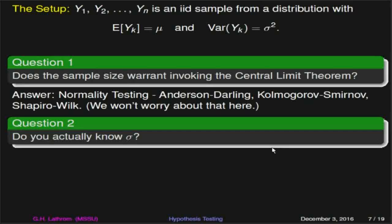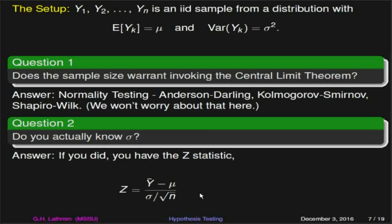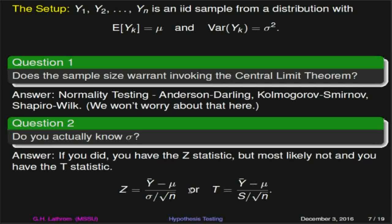The second question is: do we know the value of sigma? If we did — going back to our confidence interval video — we can use the z statistic: y-bar minus mu over sigma over root n. More than likely, in the real world, we do not know what sigma is. In that case, we'll turn to the t statistic, where instead of the standard deviation we'll use the sample standard deviation — the square root of the sample variance.